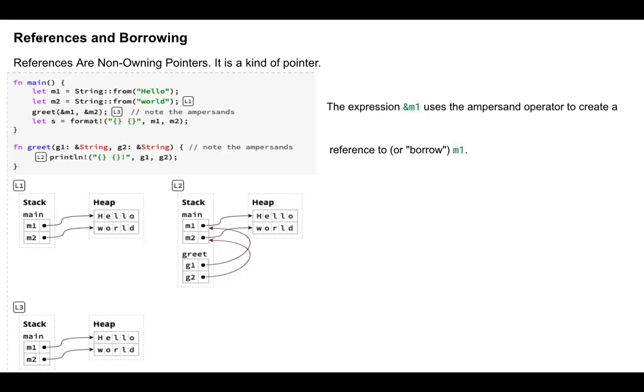So what is referencing here in this context? References are non-owning pointers. Non-owning means they do not own the data that they are pointing to. The piece of information they are pointing to, they do not own it. It's a pointer, but they do not own it. Let's see this program, it'll make it clear.